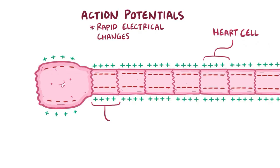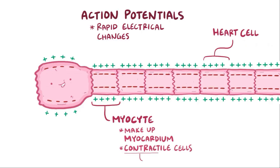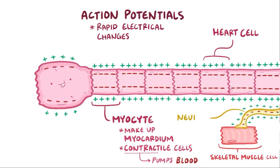The cells that receive that signal are called myocytes because they make up the myocardium, which is the muscular middle layer of the heart. Myocytes are also called contractile cells because they contract to allow the heart to pump blood. Myocytes are different from skeletal muscle cells, which get their action potential signals directly from neurons.